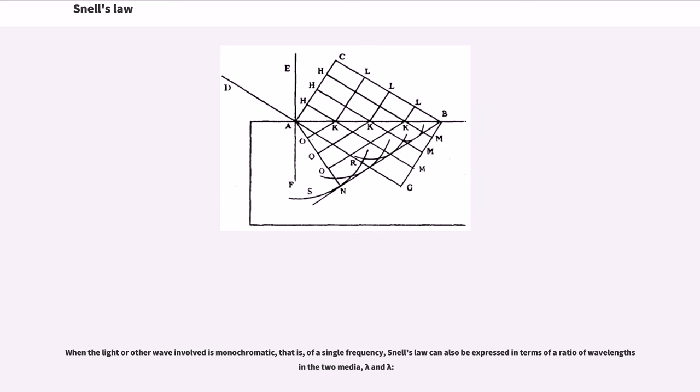When the light or other wave involved is monochromatic, that is, of a single frequency, Snell's law can also be expressed in terms of a ratio of wavelengths in the two media, lambda and lambda.